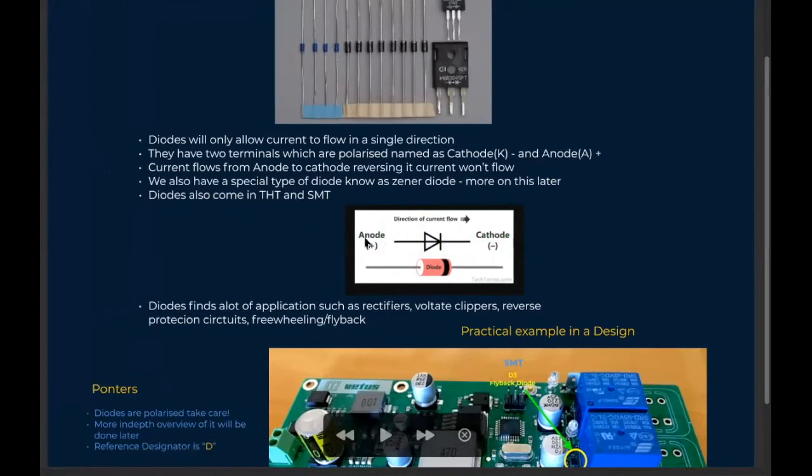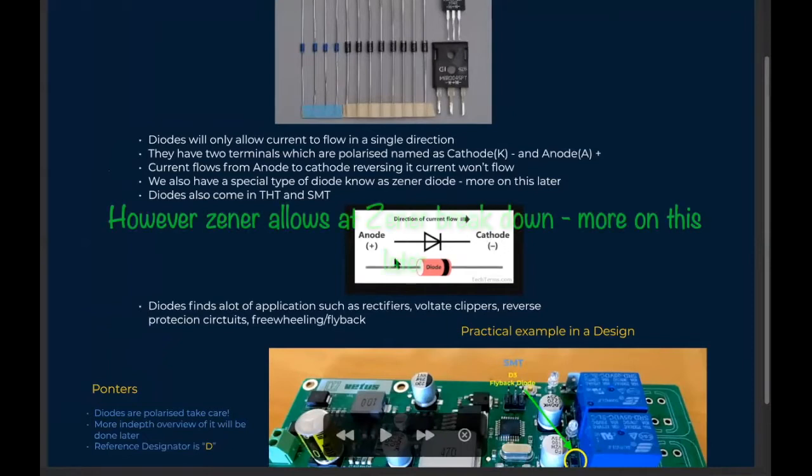And current flows from positive, the anode, to cathode. If you apply current this way, if you connect it this way in your circuit, then current won't flow.